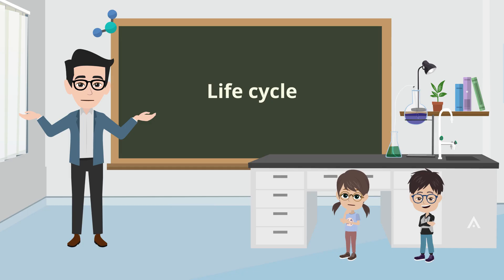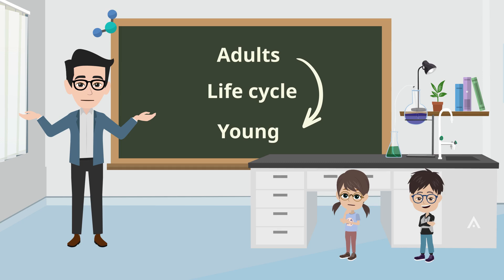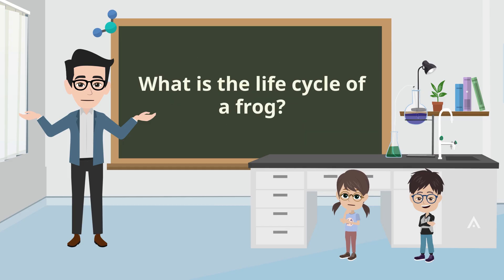A life cycle is a series of stages that living things go through from birth to death. In a life cycle, the adults reproduce and have young, then the adults grow old and die while the young grow and develop into adults. That's right, so what is the life cycle of a frog?